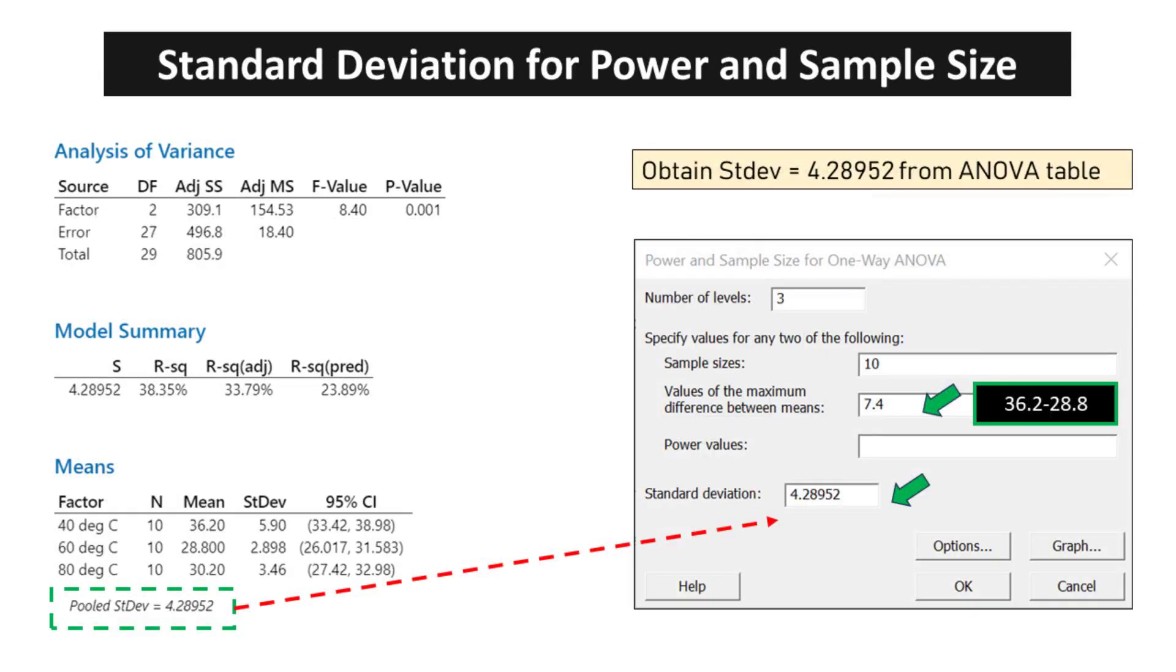We obtained a standard deviation of 4.28952 from an ANOVA table. This value represents the measure of the amount of variation or dispersion of a set of values.